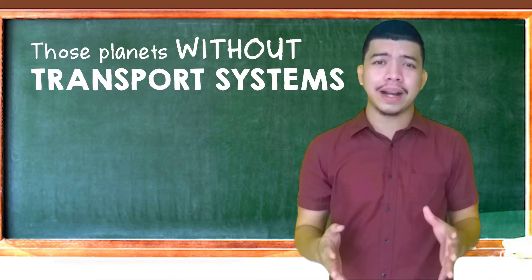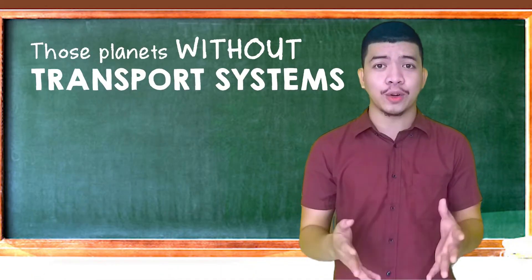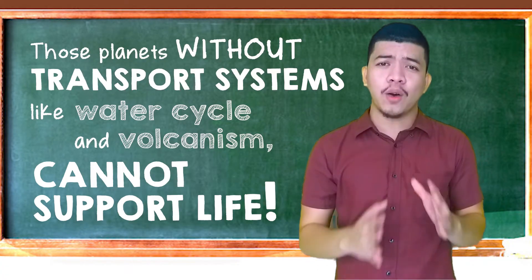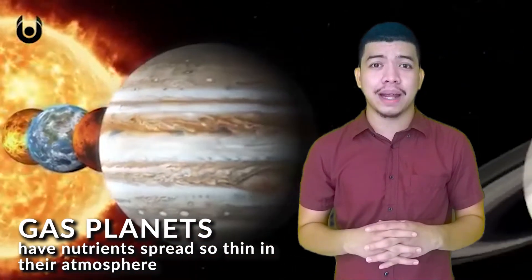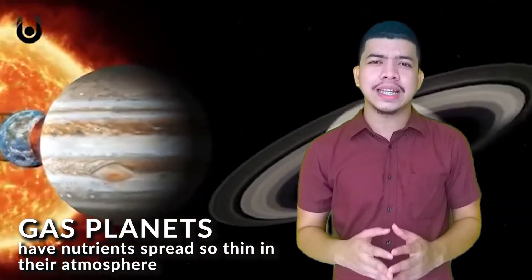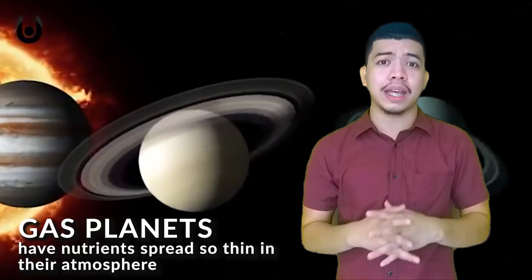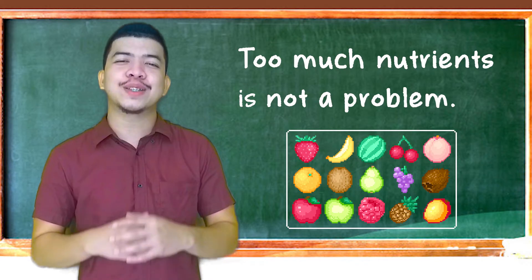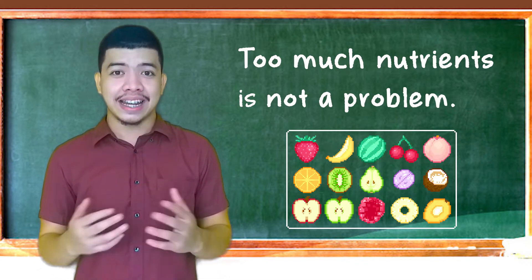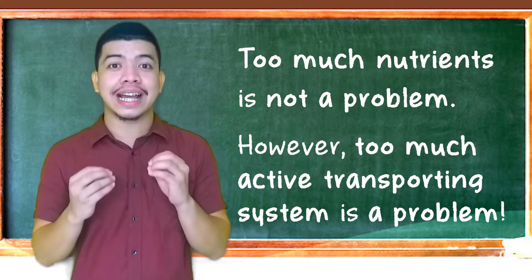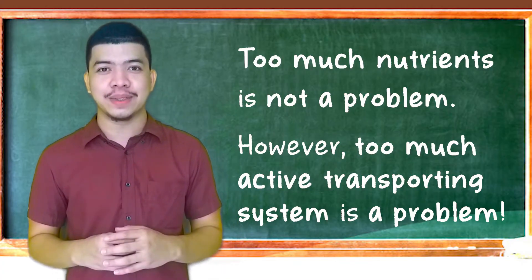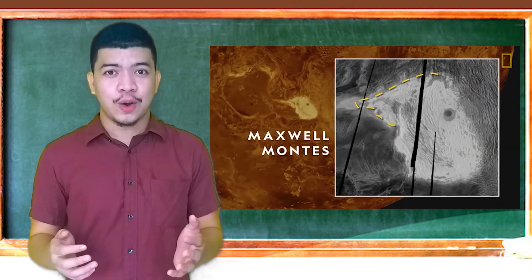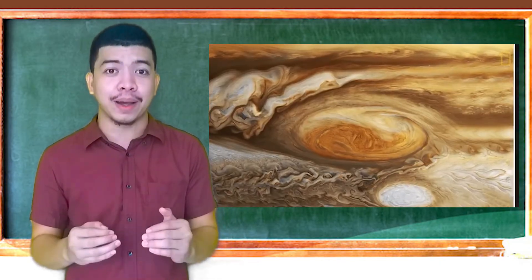Yung mga planets naman na walang paraan to deliver nutrients to its organisms, halimbawa, walang water cycle, walang volcanic activities, they also cannot support life. Ganon din sa mga gas planets na kung saan yung nutrients are spread so thin sa hangin at magiging mahirap kunin ito ng mga possible organisms. No problem naman tayo kapag sobrang dami ng nutrients. Kaya nang, nakangbal naman yung sobrang active ng mga taga-deliver ng nutrients to organisms, patay tayo dun. Halimbawa, sobrang active ng mga volcanoes sa Venus o kaya naman yung sobrang tinding mga bagyo gaya ng sa Jupiter.